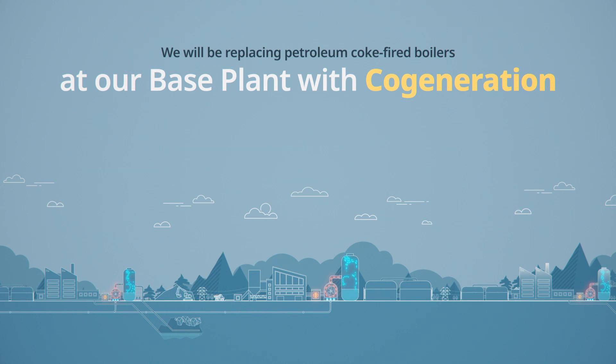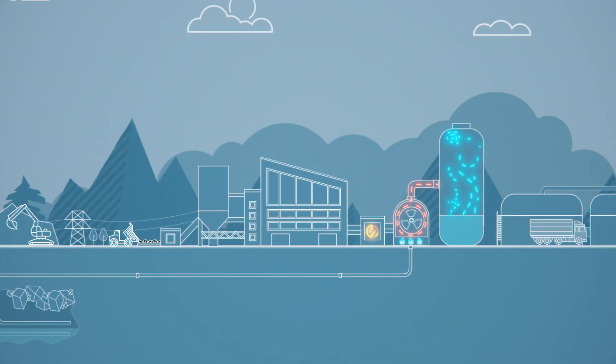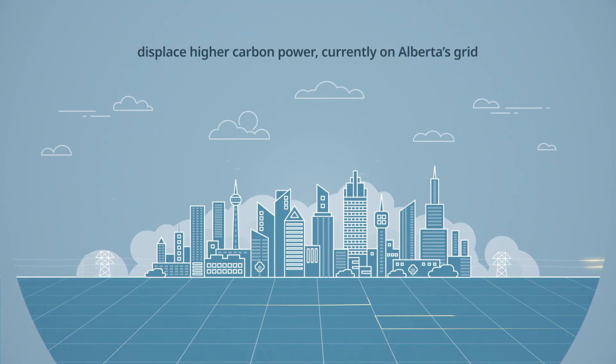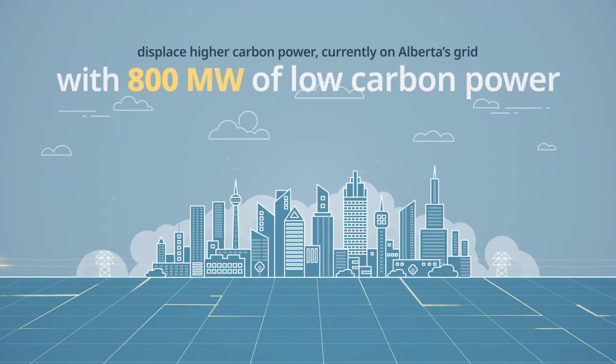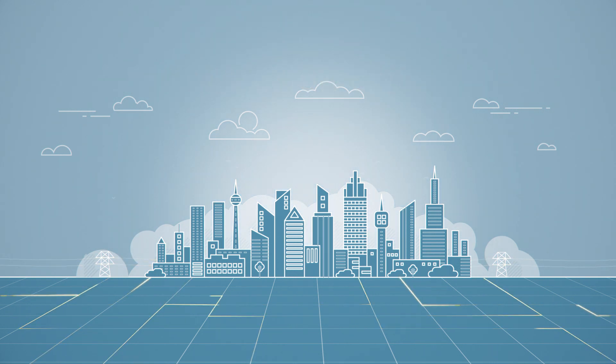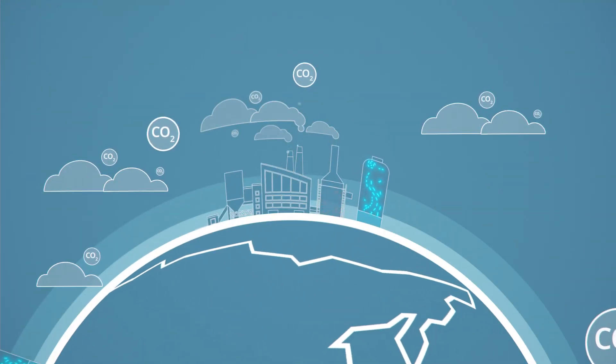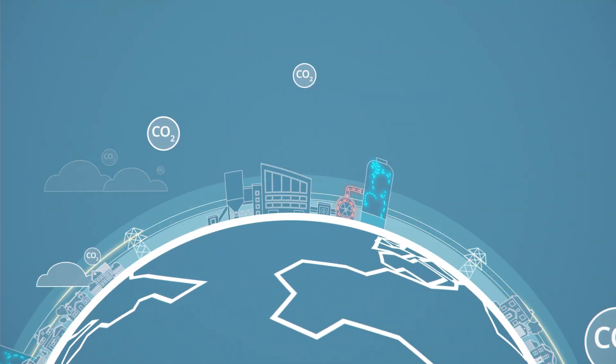By replacing these boilers with cogeneration units, we will not only provide the facility with the heat and steam needed for operations, but it will allow us to produce 800 megawatts of low-carbon power for Alberta's electricity grid. This is about 7% of Alberta's demand and displaces the higher carbon power, such as coal, currently used.